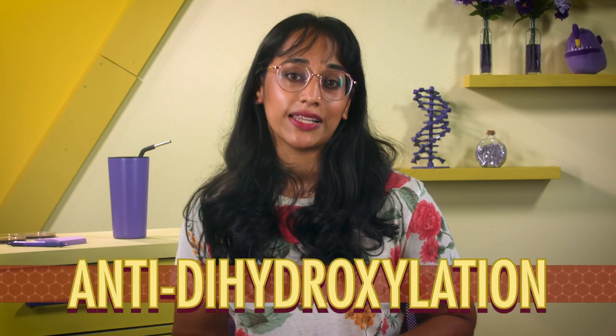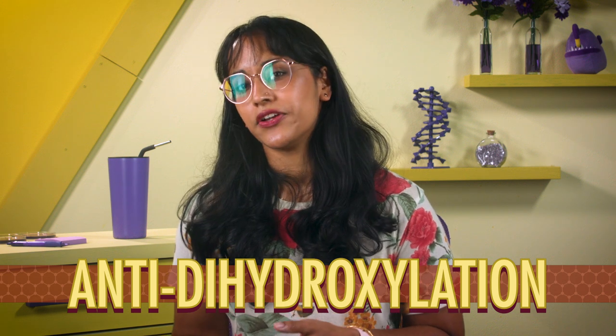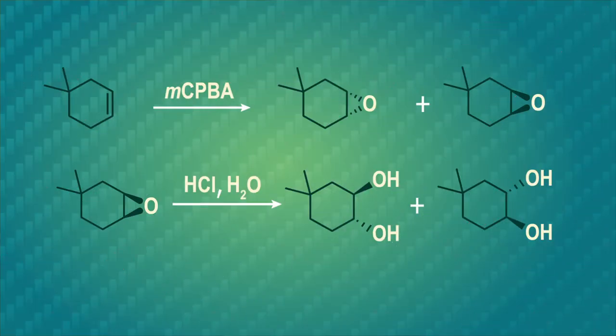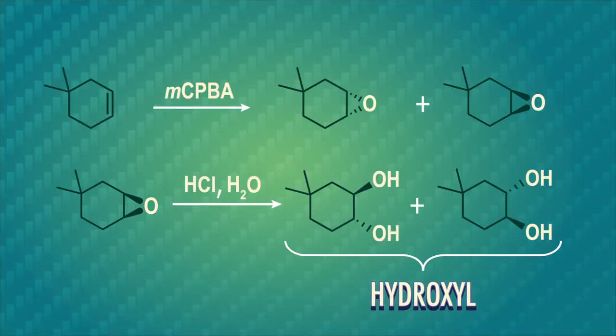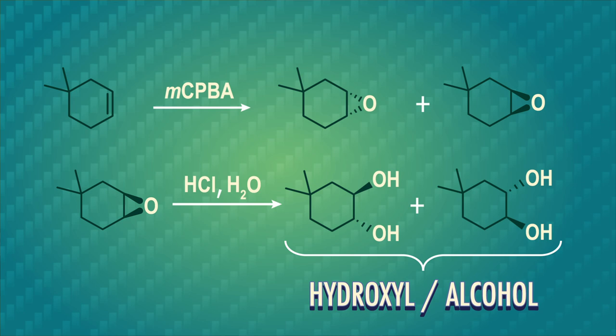Now we know how to make an epoxide, which is a fun little ring shape. Earlier in this series, we looked at the bond energy of cyclopropane and learned that three-membered rings have a lot of strain, so they're fairly unstable. And instability means the chance for some exciting chemical reactions. Specifically, we can use epoxides as a gateway to anti-dihydroxylation, a name that hints at the stereochemistry — it's going to be anti addition. This name also hints at what we'll end up with: two hydroxyl groups, also known as alcohol groups. Hydroxyl and alcohol are interchangeable.